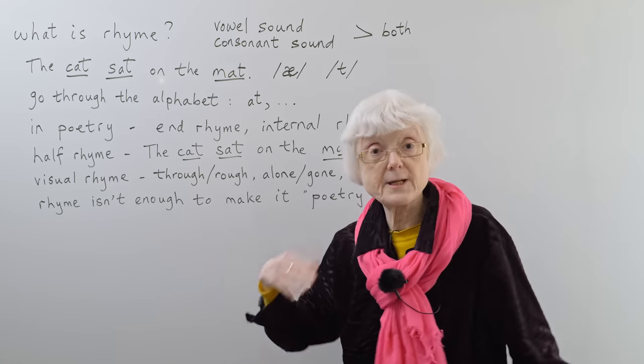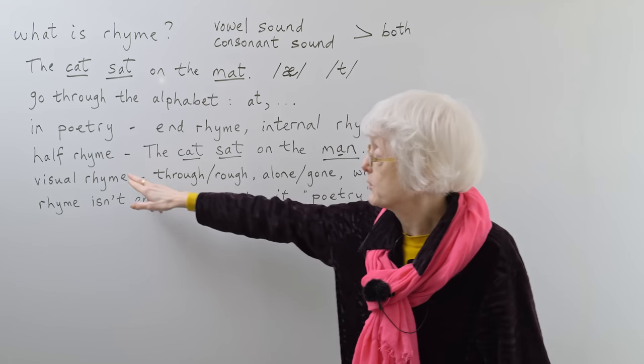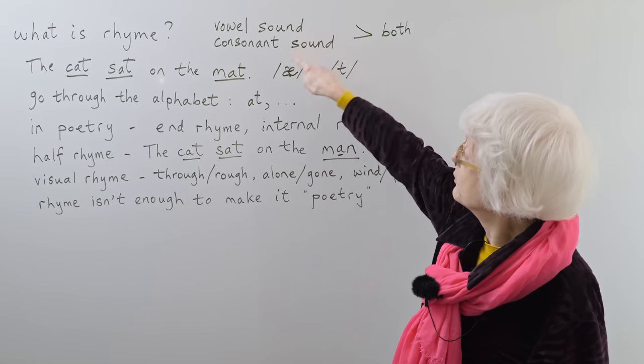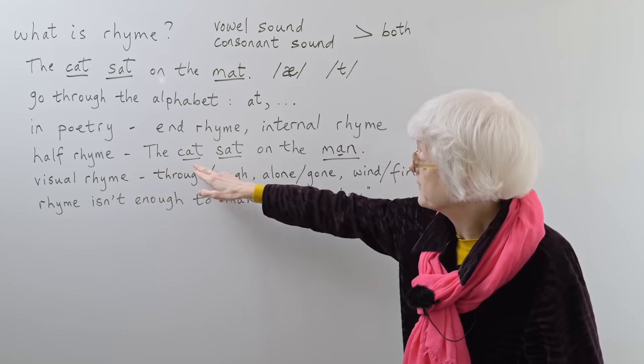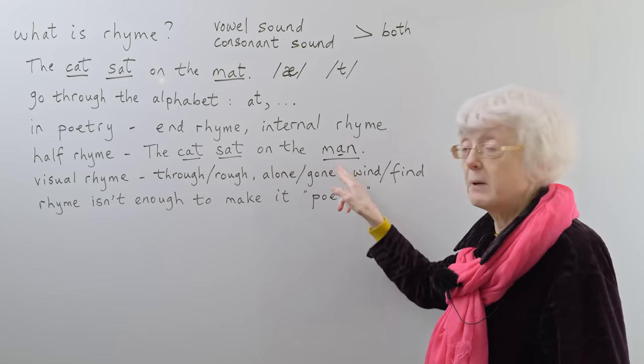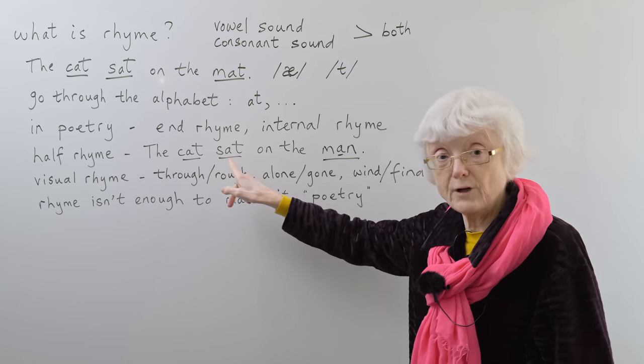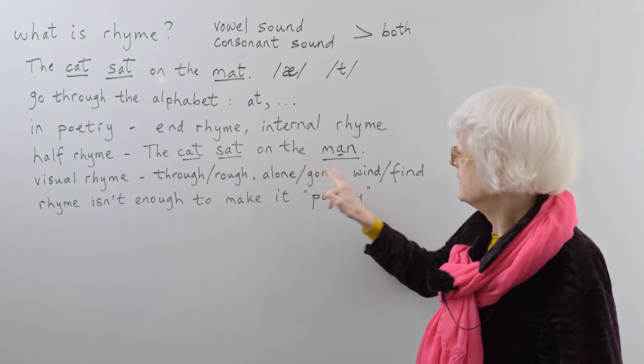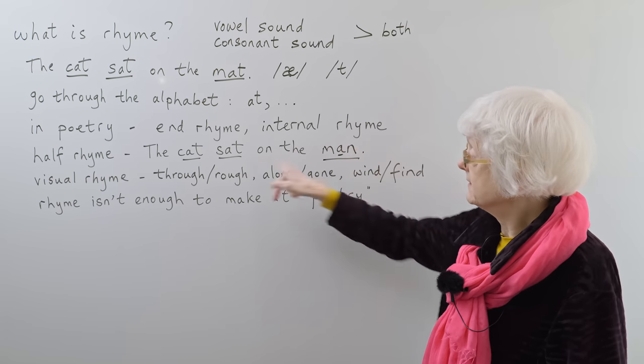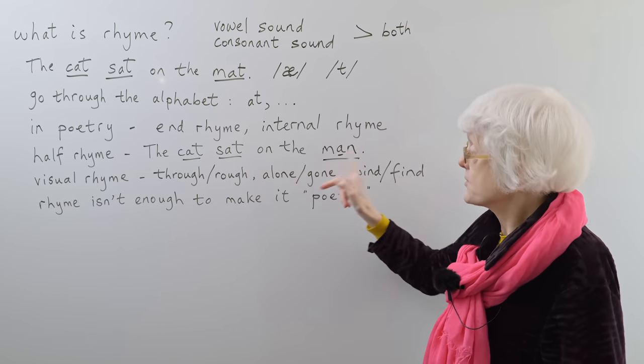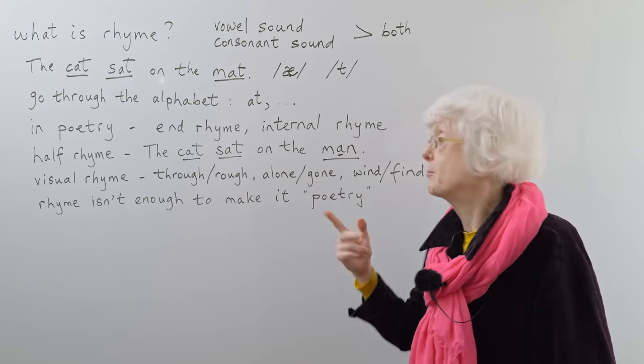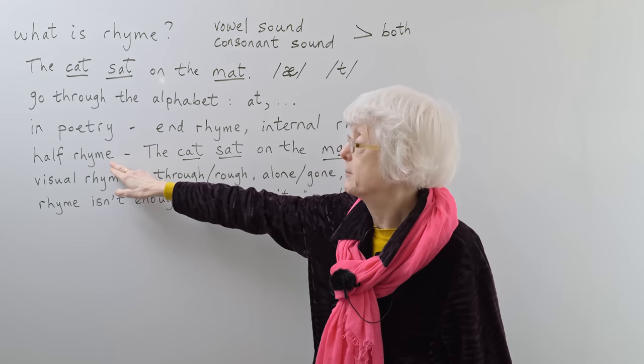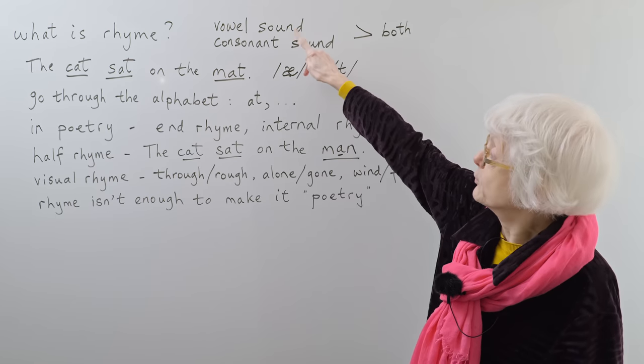You can also have in poetry, if you're analyzing it, what's called a half rhyme. That's if you're not using both, it's a half rhyme. So if you have the cat sat on the man, you've still got the same vowel, but you've got T, T, N. You've got an N here instead of a T. So it's still got the vowel sound, but it hasn't got the consonant sound with it, so that's called a half rhyme because it doesn't have both.